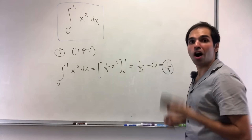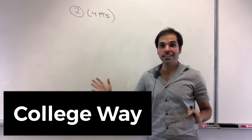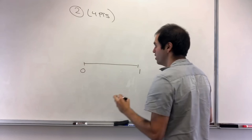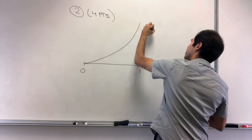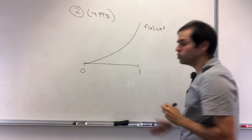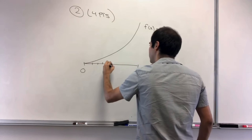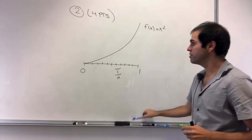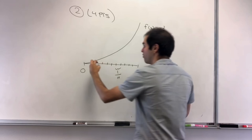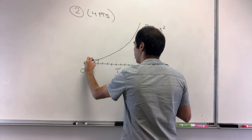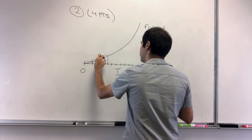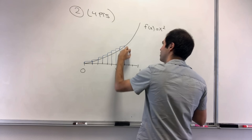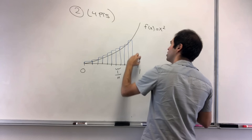Now let's do the college way. Suppose you take a college calculus course — in that case you would use Riemann sums. You start with the interval zero to one and the function f(x) = x squared. You chop zero to one into smaller intervals of length 1/n for some n, and on each piece you take the rectangle with height f of the right endpoint. You get a bunch of fine rectangles, and you take the sum of their areas and let n go to infinity.